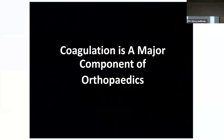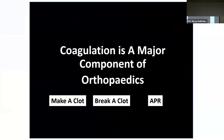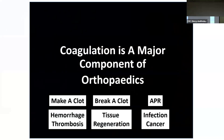We can all agree that understanding coagulation is important to orthopedic surgeons and nearly every medical field. We can divide the entire system into three parts: how to make a clot, how to dissolve a clot, and how it fits into the overall systemic picture for a patient. These categories align with clinically oriented topics spanning hemorrhage and thrombosis to tissue regeneration, infection, and cancer.